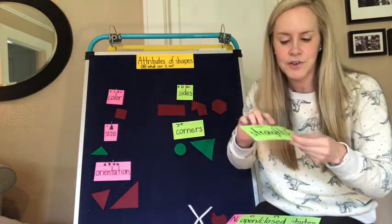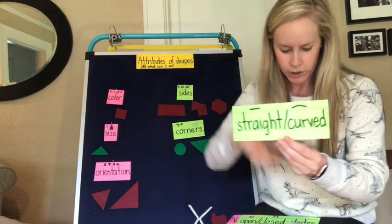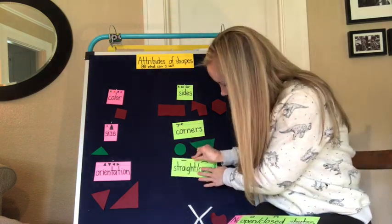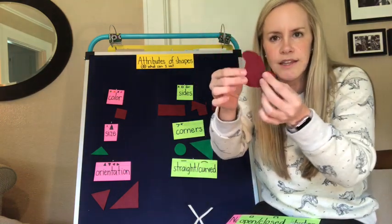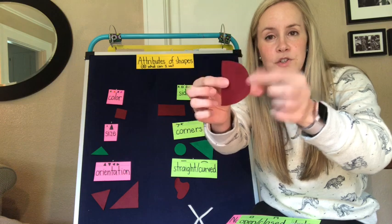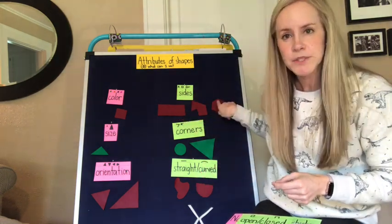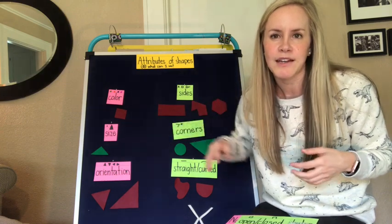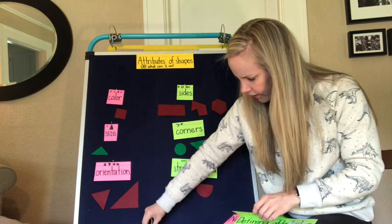Another attribute you can see is if the sides are straight or curved. For instance, this shape has no straight lines — it's all curves. This half circle right here has one straight line and one curve. A lot of other shapes only have straight lines. Normally in school you talk mostly about the kinds of shapes that have only straight lines.